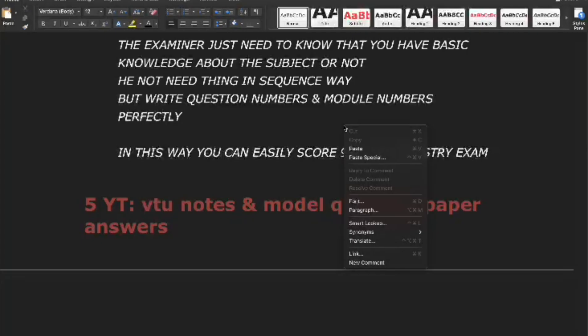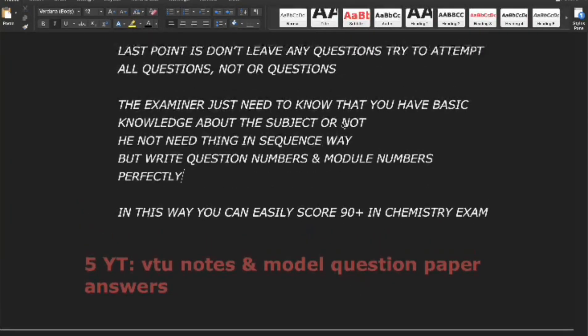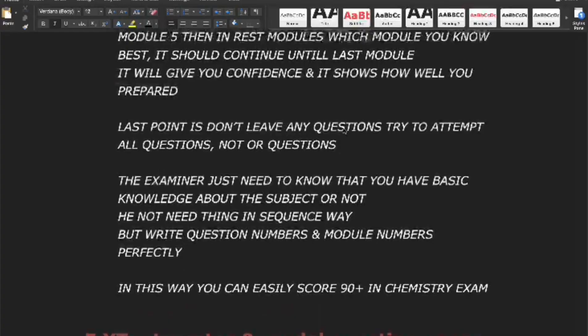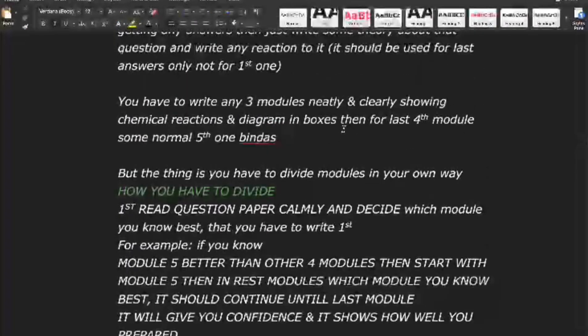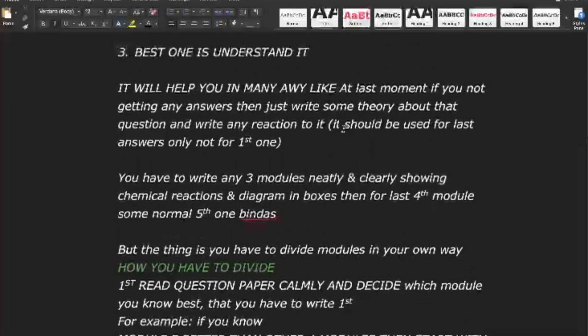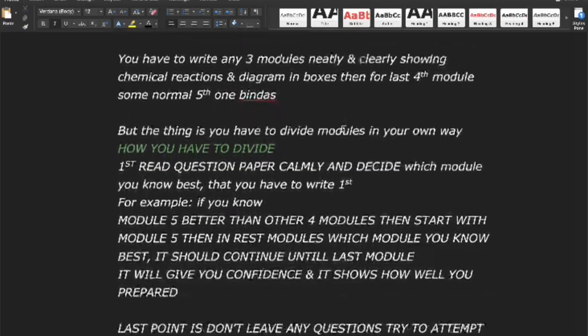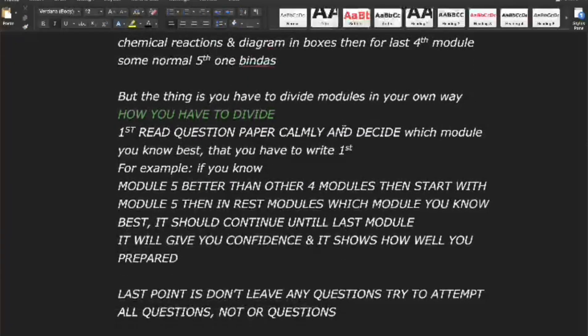Final exam strategy: If you're stuck at the last moment, write some theory related to the question and add a chemical reaction. Use this only for the last few answers, not the first ones. Write any three modules neatly and clearly, showing chemical reactions and diagrams in boxes. For the fourth and fifth modules, write simpler answers but ensure you attempt all questions.